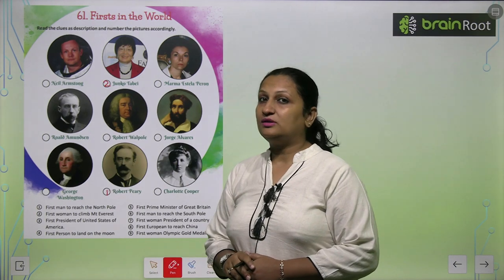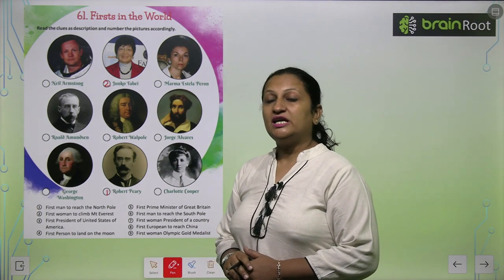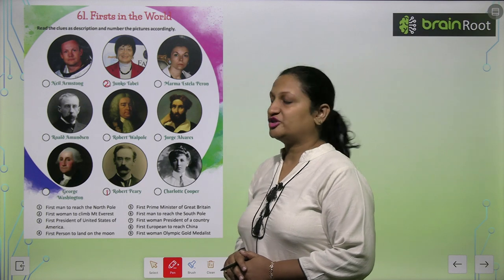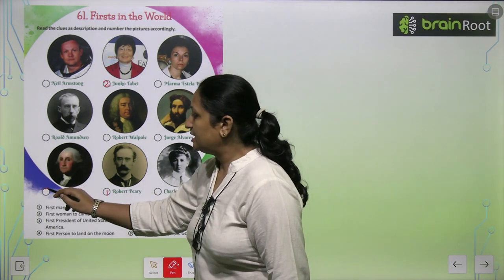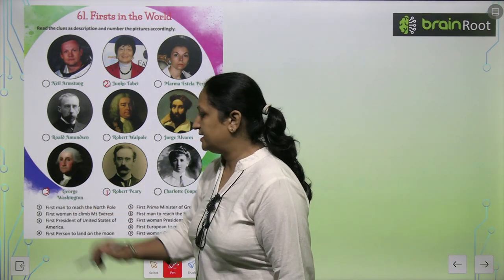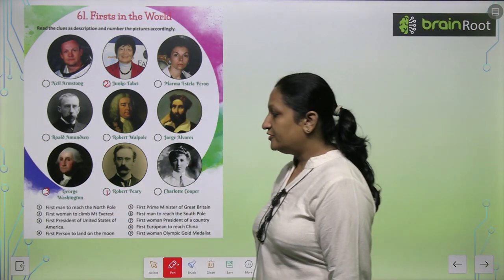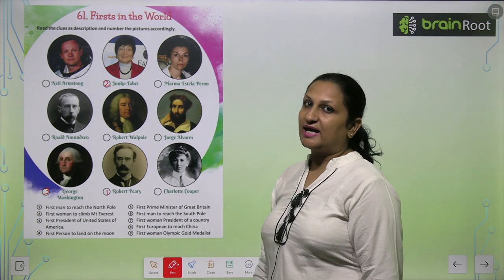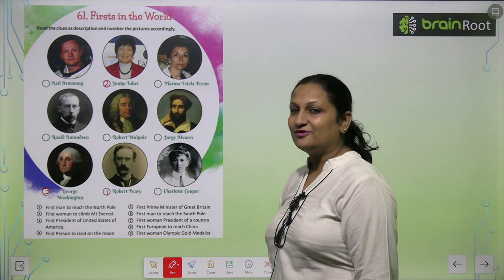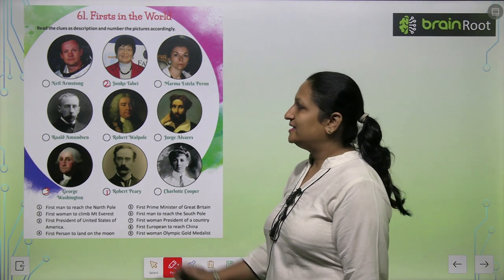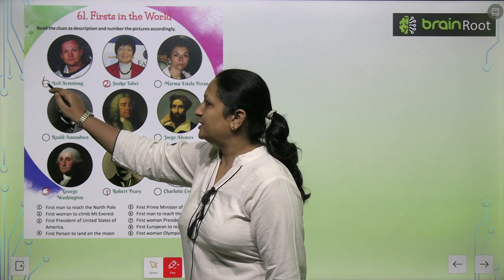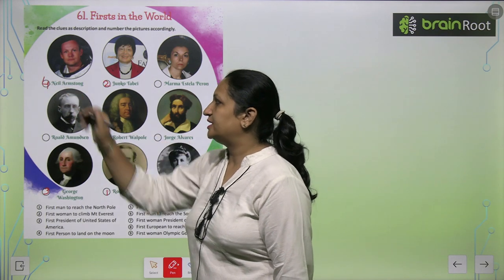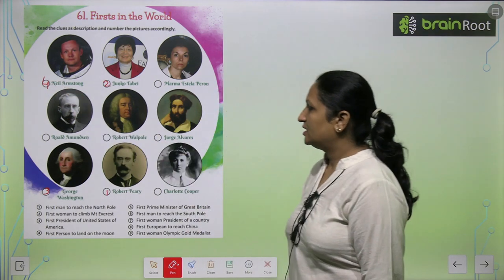He was George Washington. Is liye aap yaha pe number 3 likhenge. First person to land on the moon — you all know it. He was Neil Armstrong. Is liye hum yaha pe number 4 likhenge.